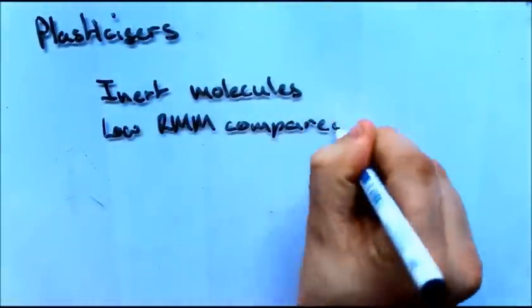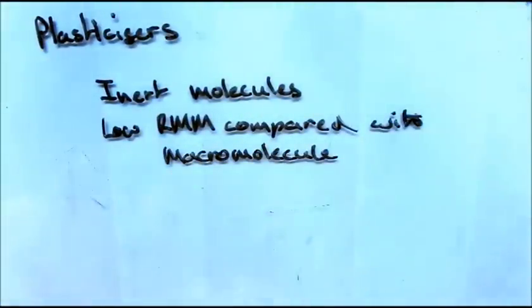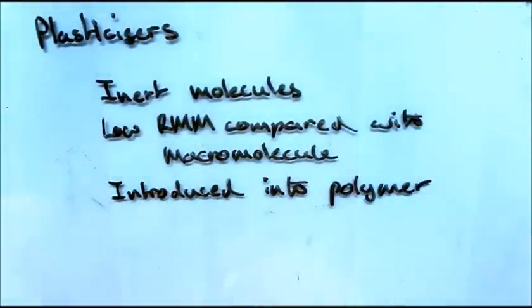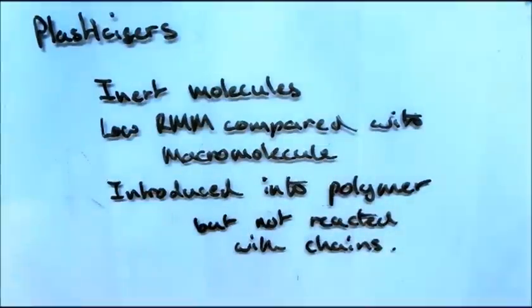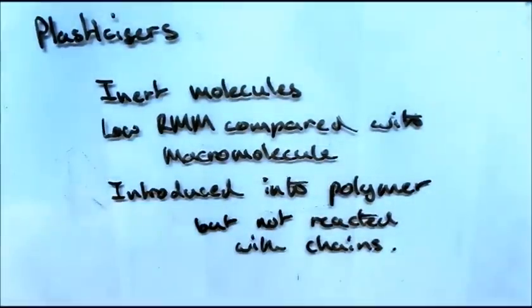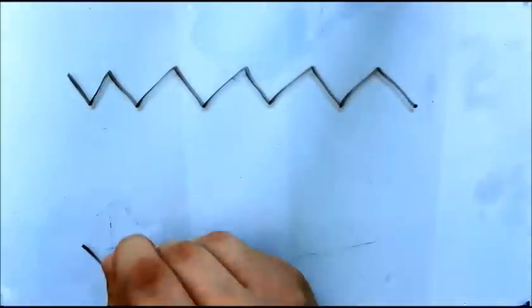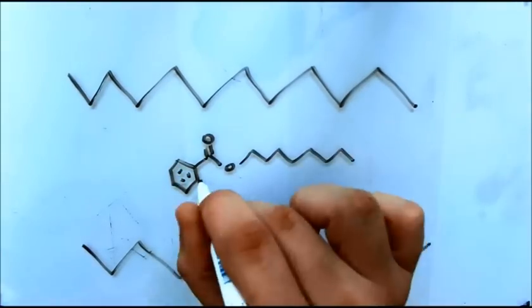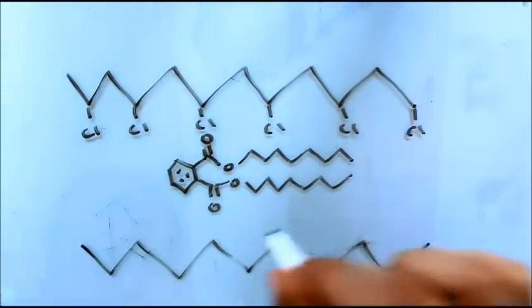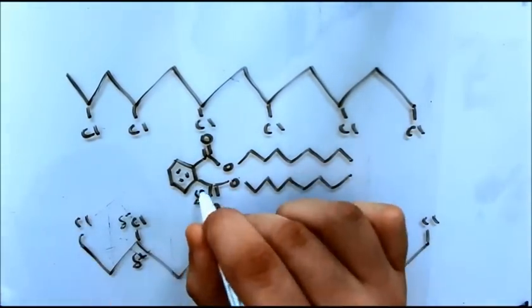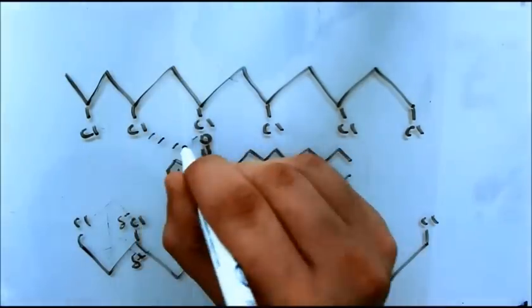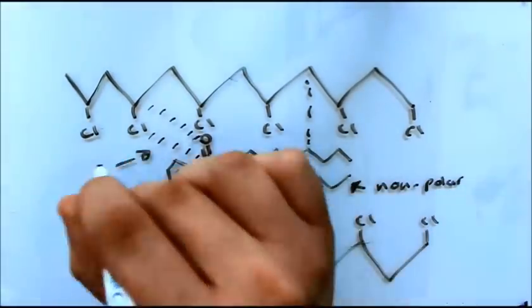So why are some plasticizers controversial? A property of plasticizers is that they are inert and do not react directly with the polymer chains. This means that the plasticizers are free to move within the plastic and can potentially move out of the plastic. They are only bound by the weak intermolecular forces between the polymer chains and the plasticizer itself.